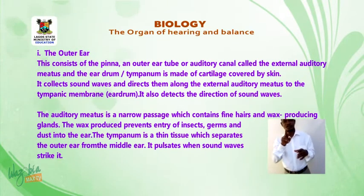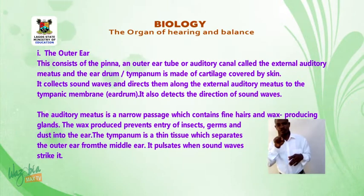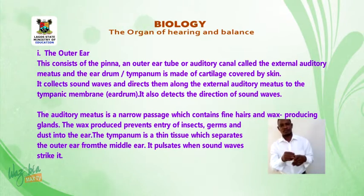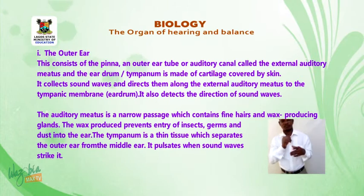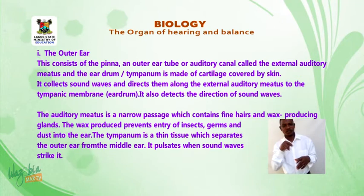The auditory meatus is a narrow passage which contains fine hairs and wax-producing glands. The wax produced prevents the entry of insects, germs, and dust into the ear.